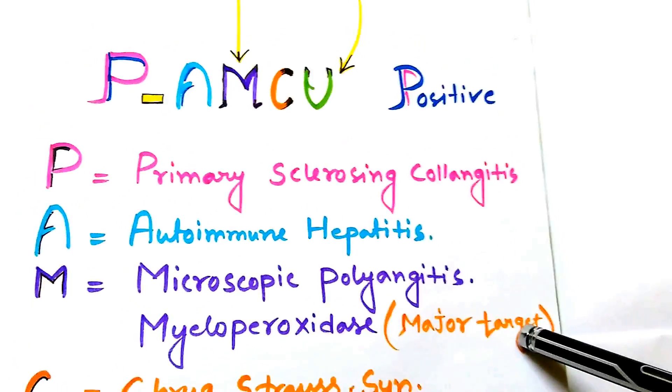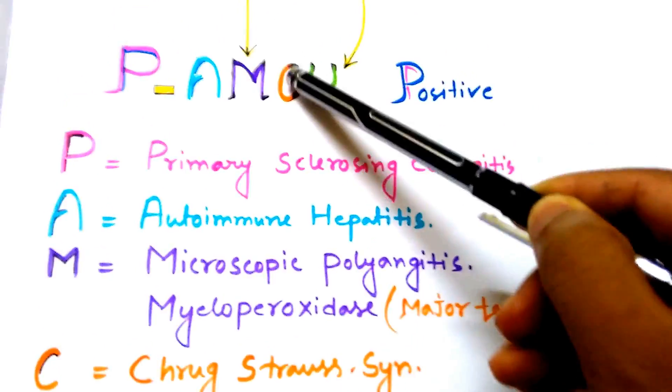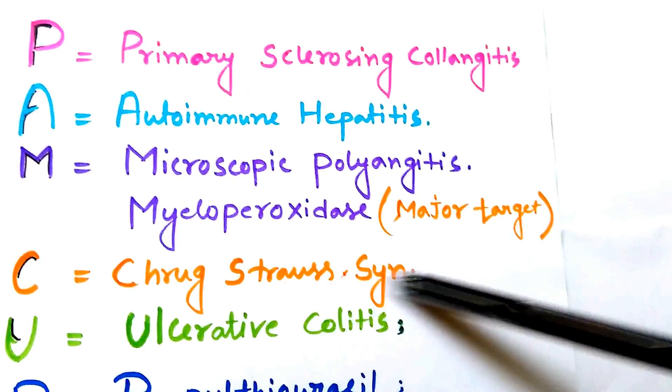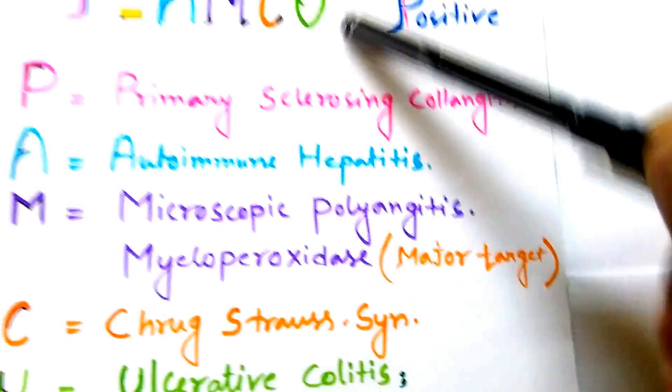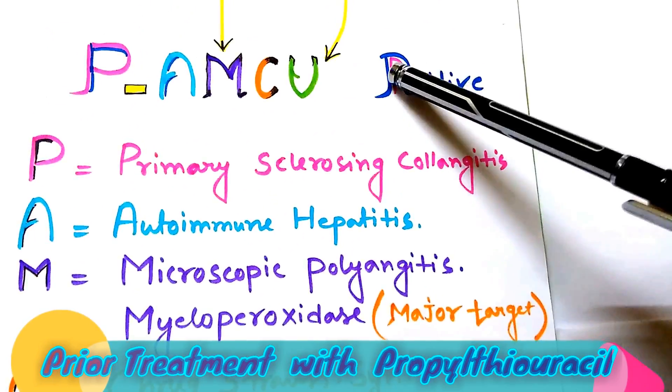C for Churg-Strauss Syndrome, U for Ulcerative Colitis.